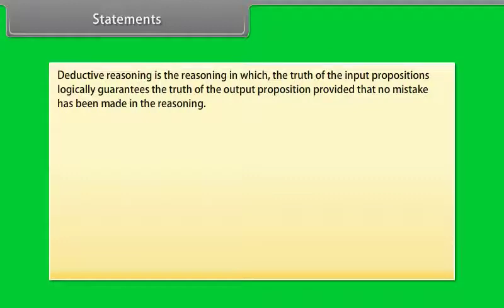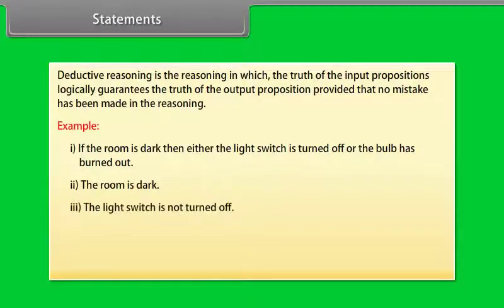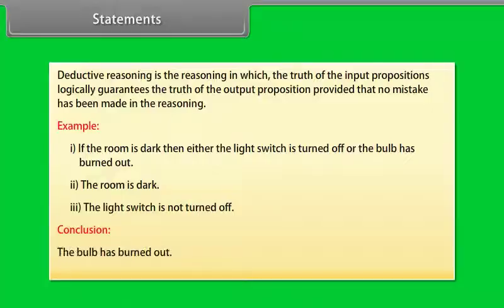provided that no mistake has been made in the reasoning. Example: infer from the belief — (1) if the room is dark, then either the light switch is turned off or the bulb has burned out; (2) the room is dark; (3) the light switch is not turned off. Conclusion: the bulb has burned out.